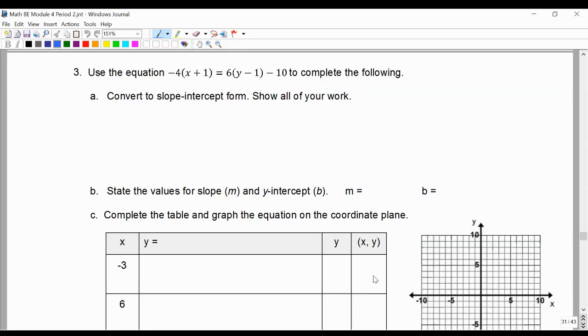In this video, I'm going to work through number three in the 4.2c lesson. First off, we're going to write a note that slope intercept form is y equals mx plus b.